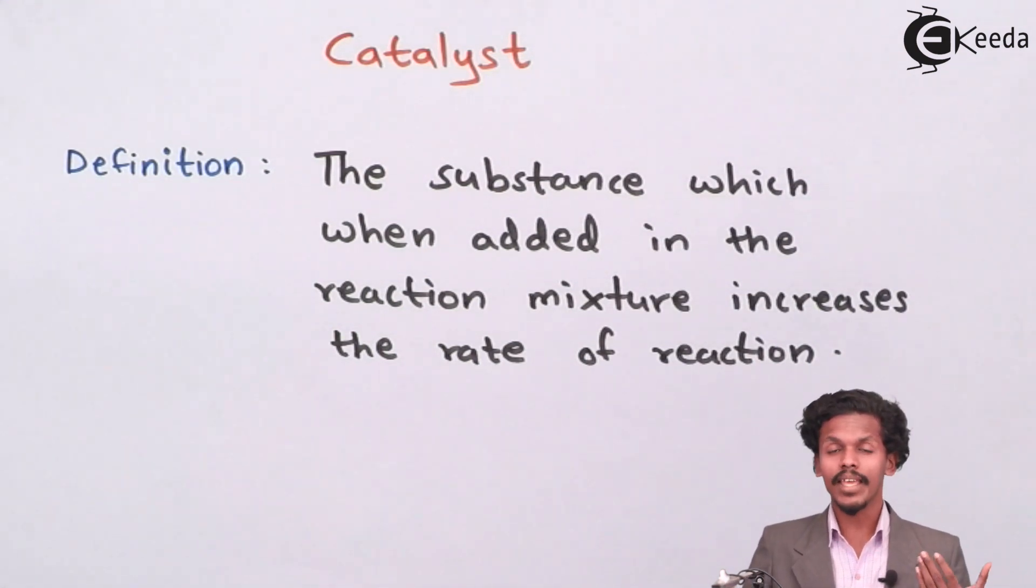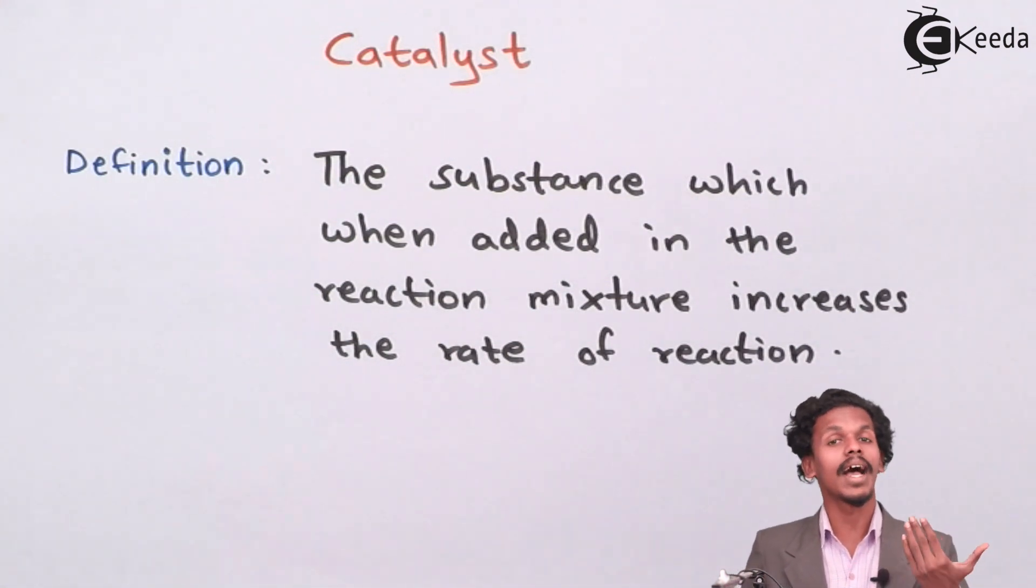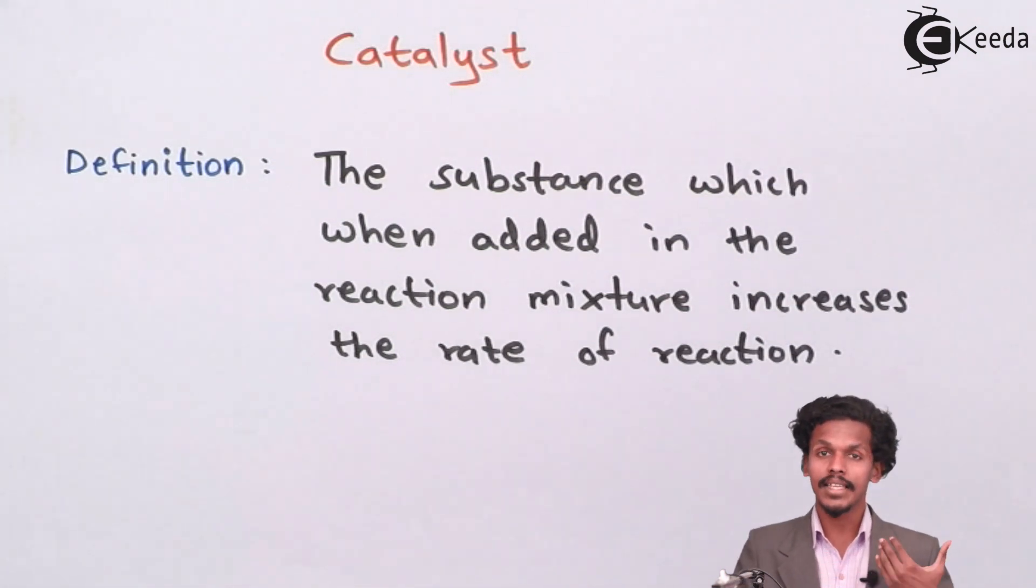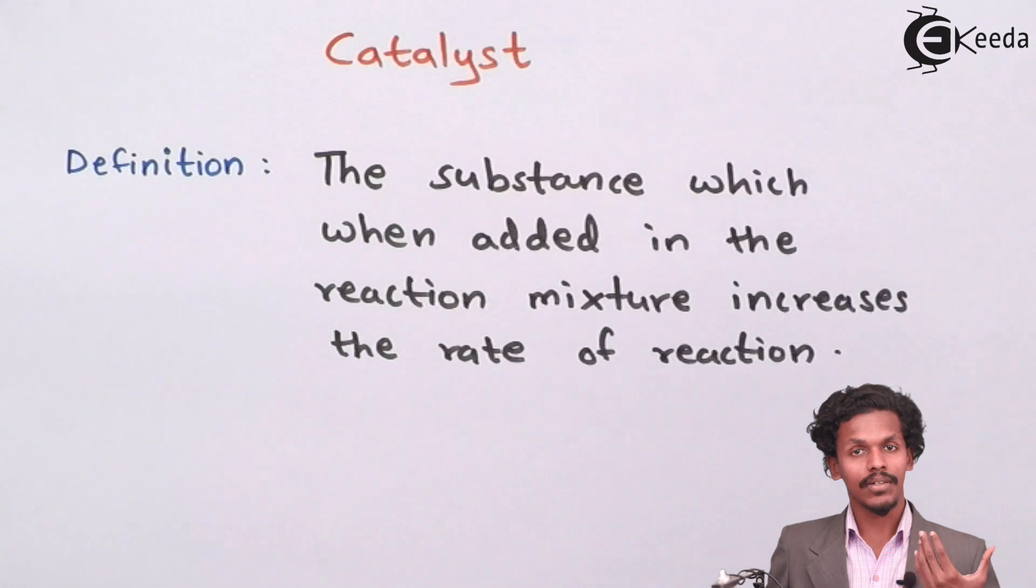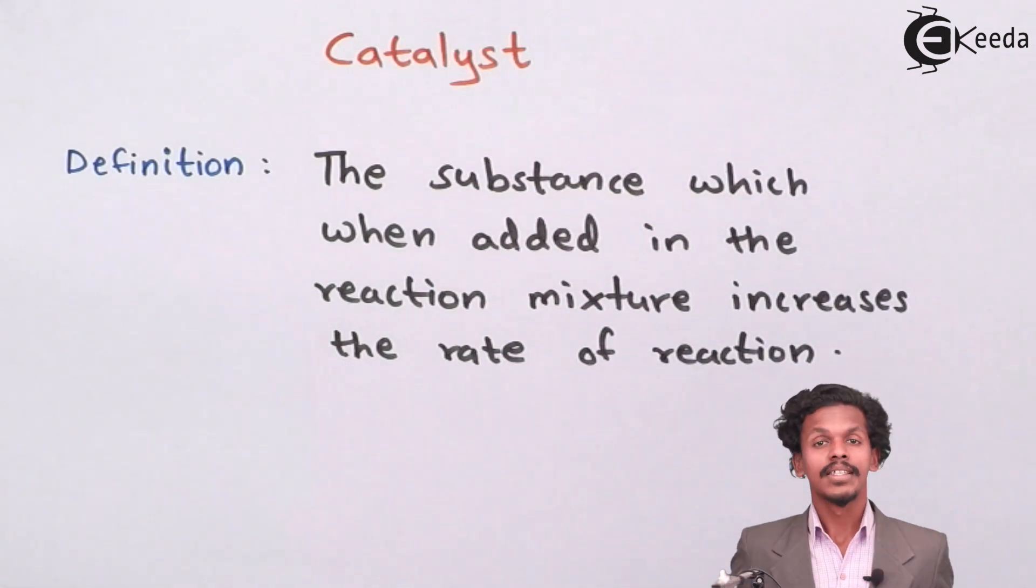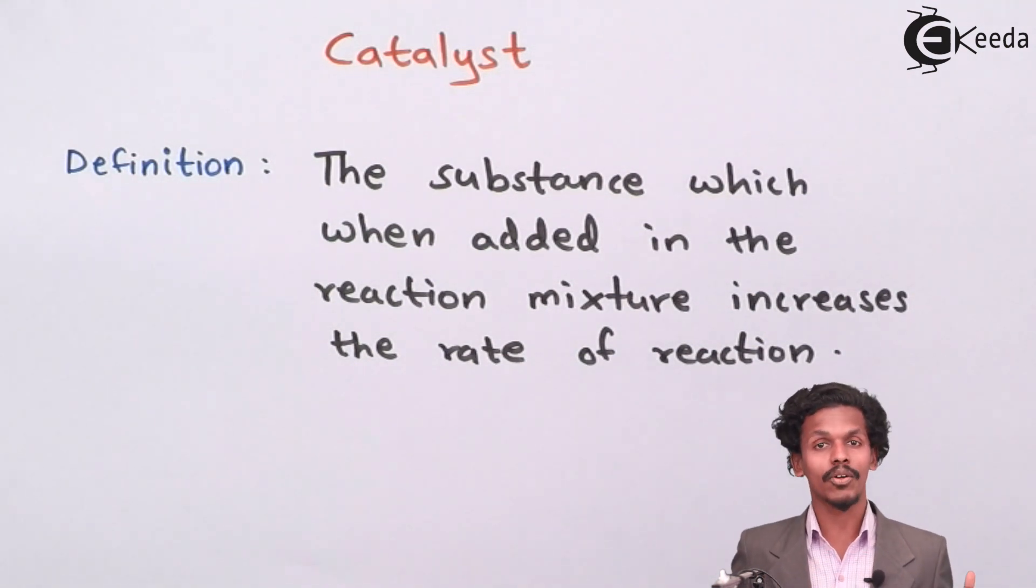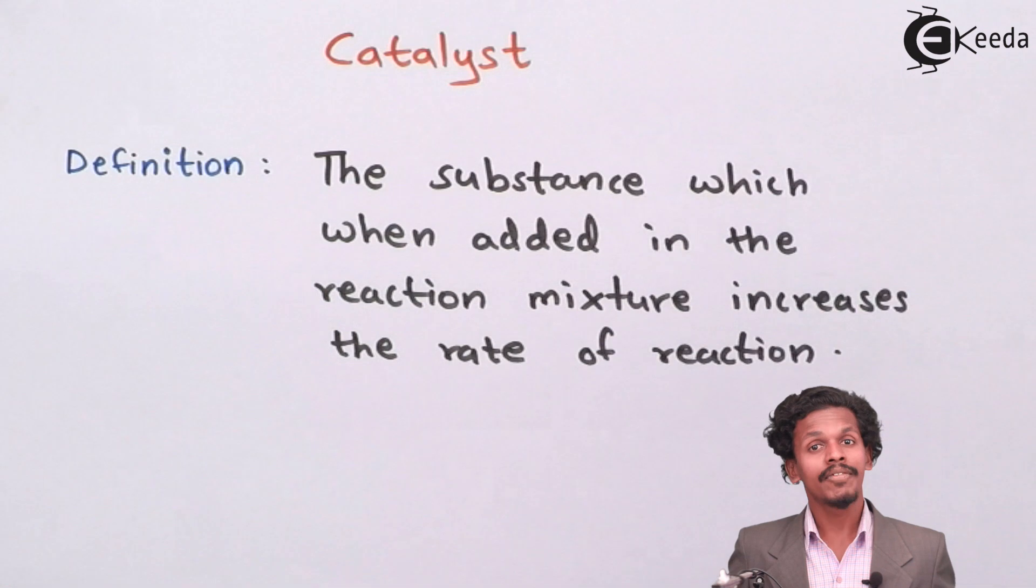Suppose A plus B gives a transition state which has a higher energy and which is not providing the rate of reaction too fast. If the energy of this transition state is high, then it is very difficult to obtain the product like C and D.